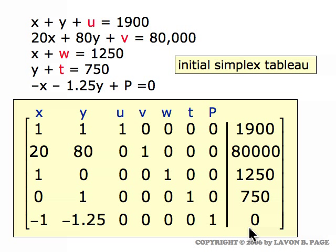It is always necessary to put the profit function — or cost function, or whatever represents what we're maximizing or minimizing — as the equation listed on the bottom, corresponding to the bottom row of our initial simplex tableau. What we've done in this video is simply illustrate the setup for the initial simplex tableau. We haven't done anything with it yet, but what we will do is perform row operations on it, very similar to Chapter 1, only now our goal will be not to solve a system of equations but to solve the linear programming problem.